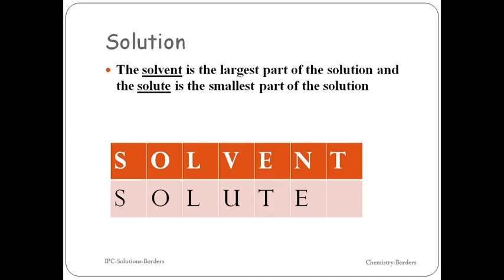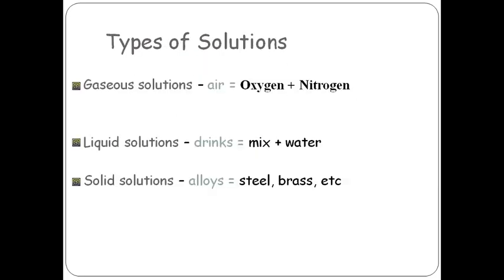The solvent is the largest part of a solution and the solute is the smallest portion of a solution. There are three major kinds of solution: gaseous solution — for example, air, which contains ample gases, mainly oxygen and nitrogen; liquid solution, like beverages, milk and water; and solid solutions, which are alloys like steel, brass, etc.